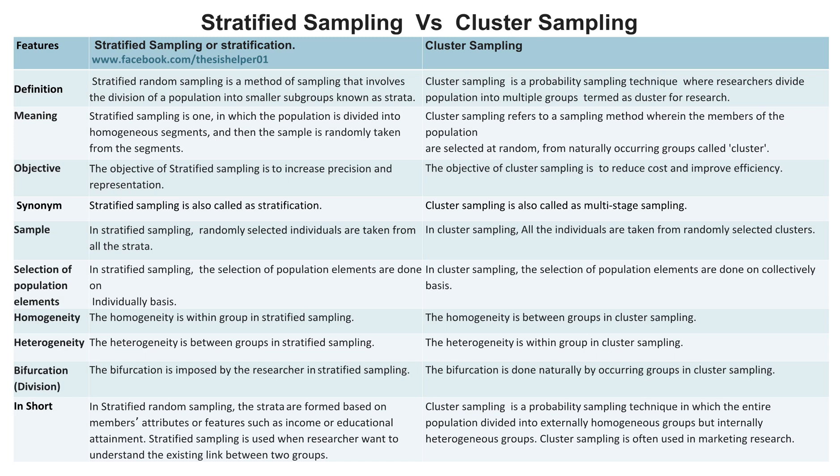In short, in stratified random sampling, the strata are formed based on members' attributes or features such as income or educational attainment. Stratified sampling is used when researchers want to understand the existing link between two groups. Whereas, cluster sampling is a probability sampling technique in which the entire population is divided into externally homogeneous but internally heterogeneous groups, and it is often used in marketing research.